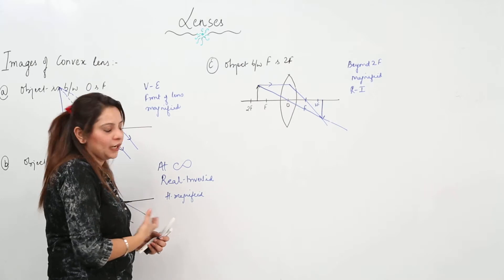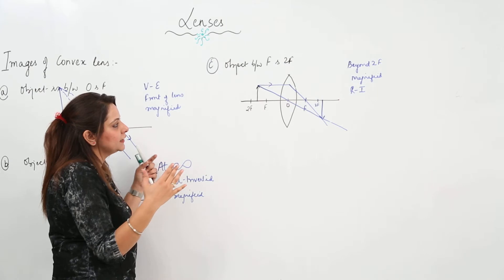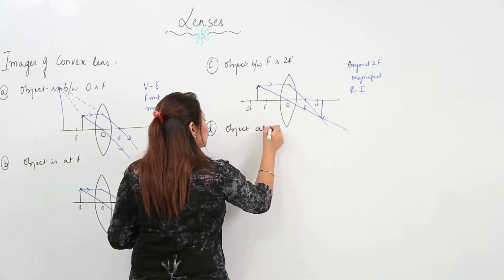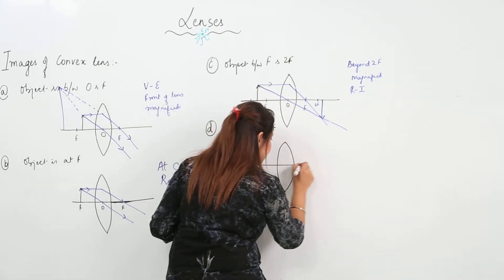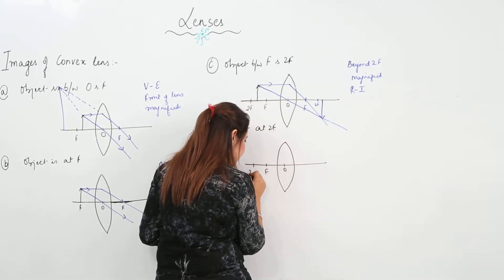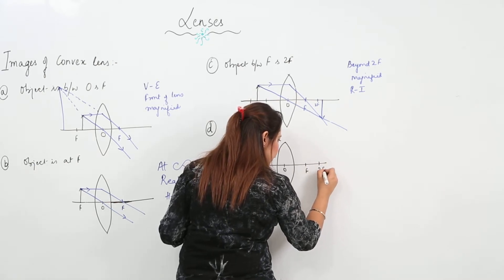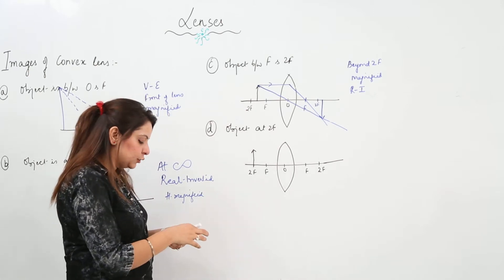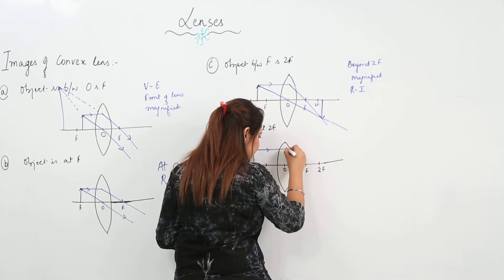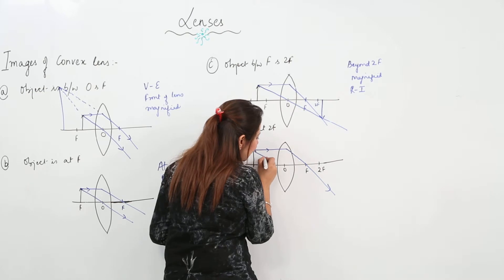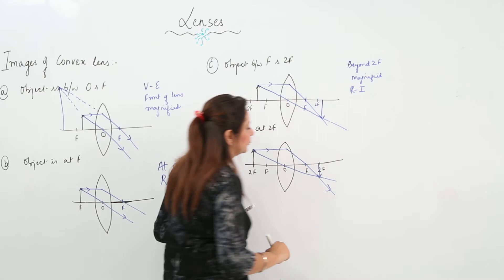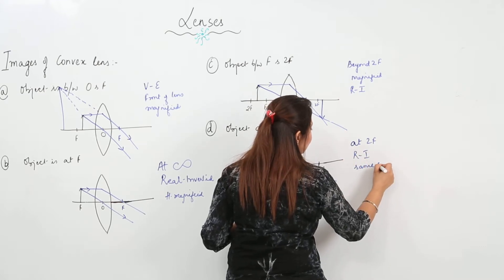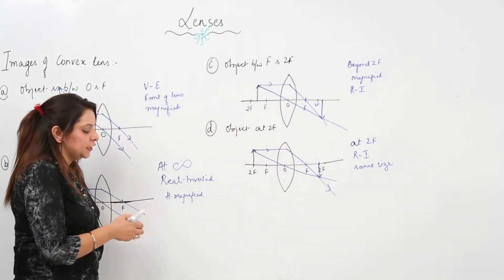Try to draw first with a rough hand and then use rulers with exact measurements — they will meet exactly at the same point. Next, the object is at 2F. A ray coming parallel after refraction passes through focus, and a ray from the optical center passes straight. We see that they exactly meet at 2F — so the image is real, inverted, and importantly, of the same size. It is not magnified and not diminished.